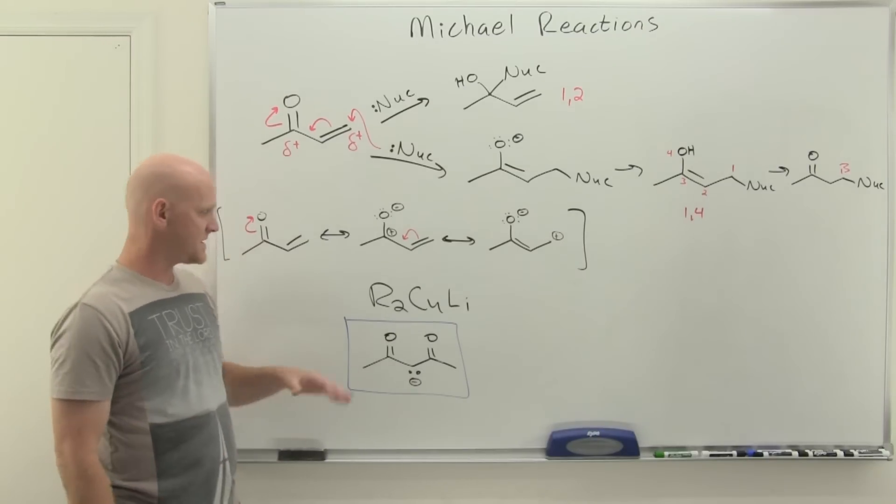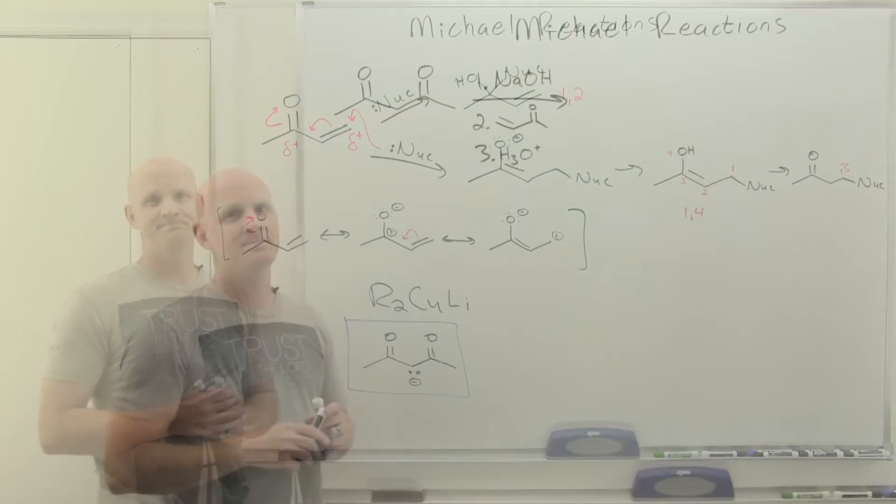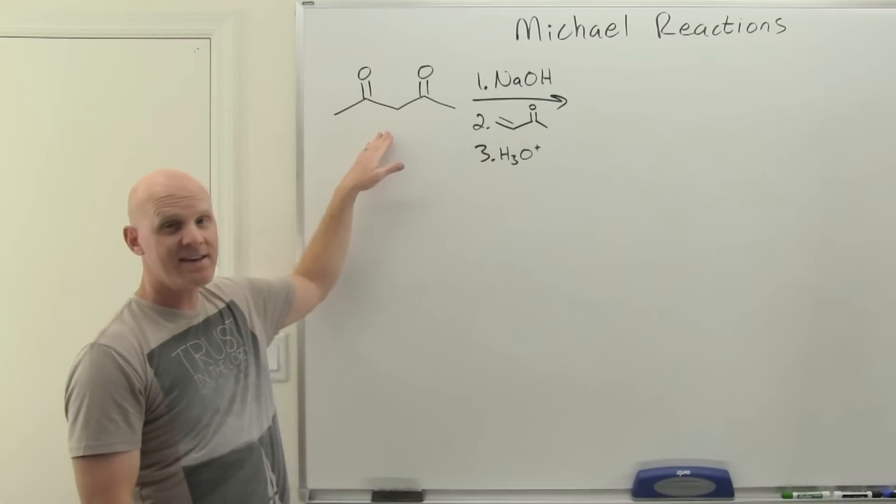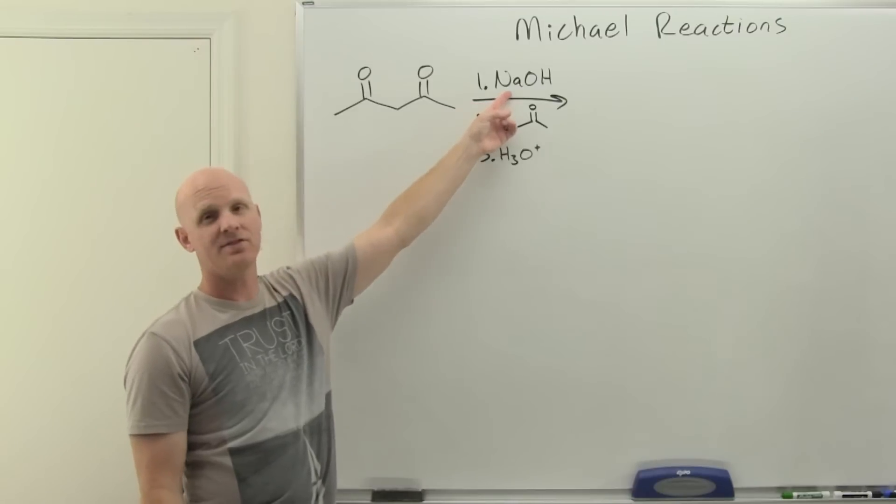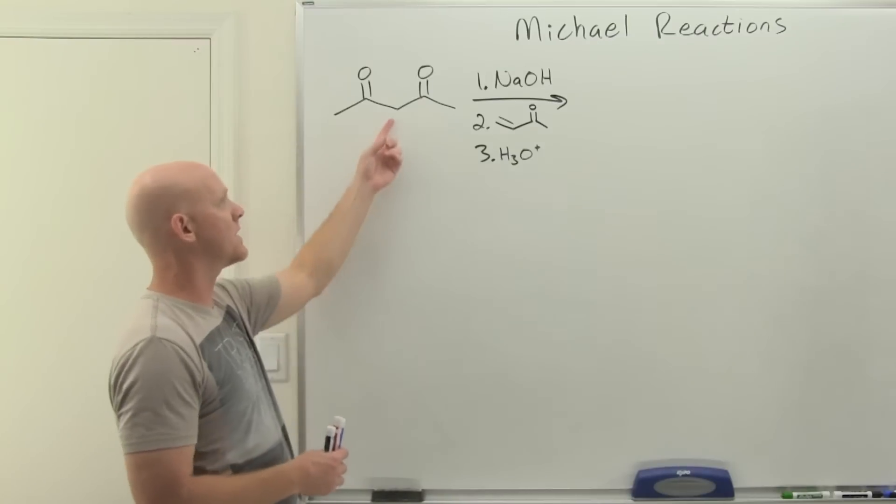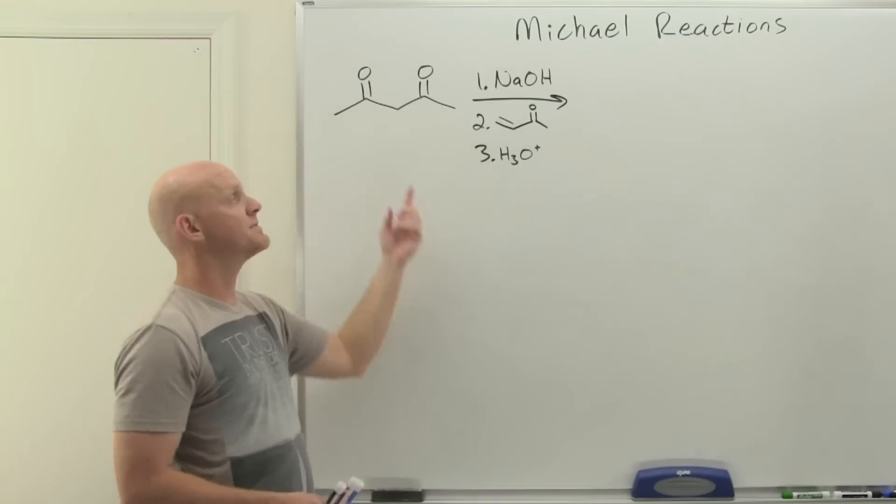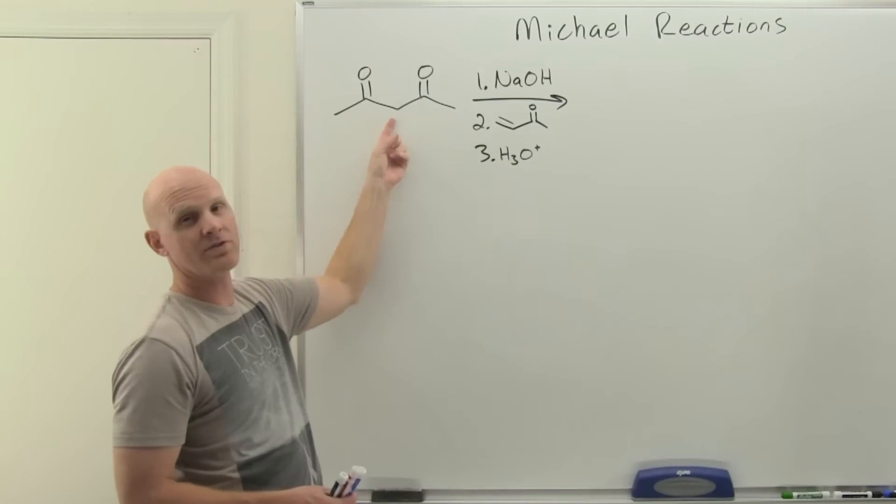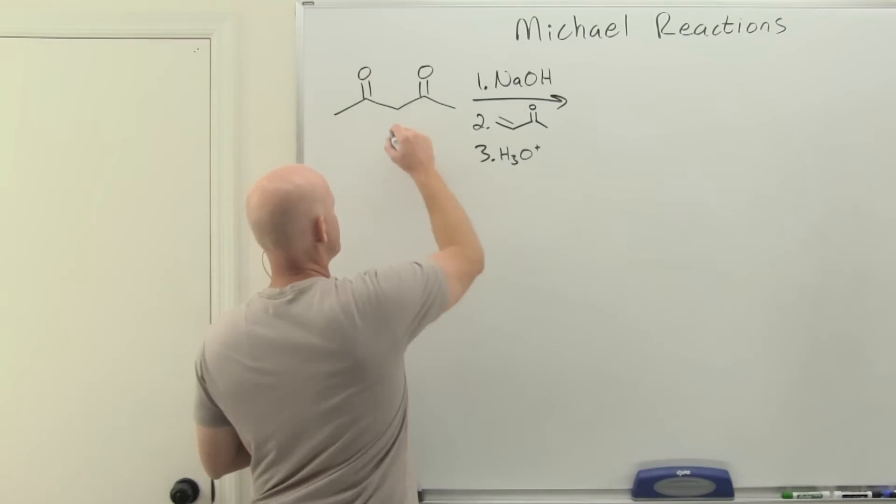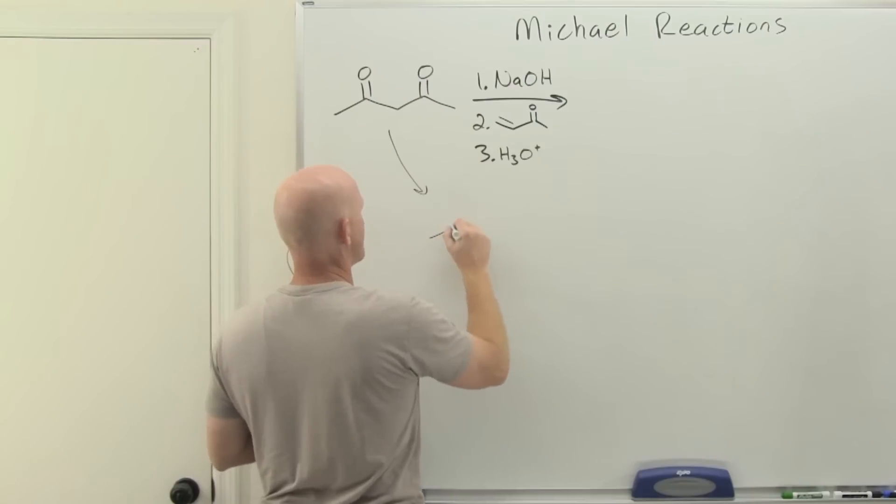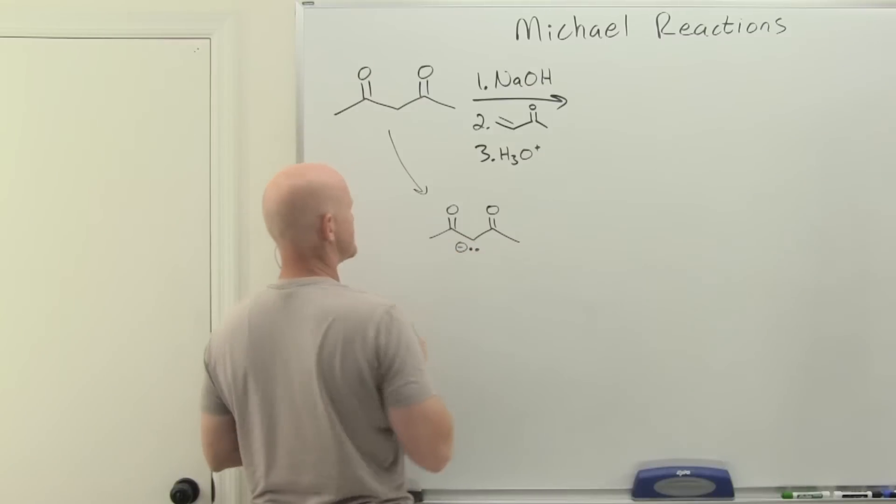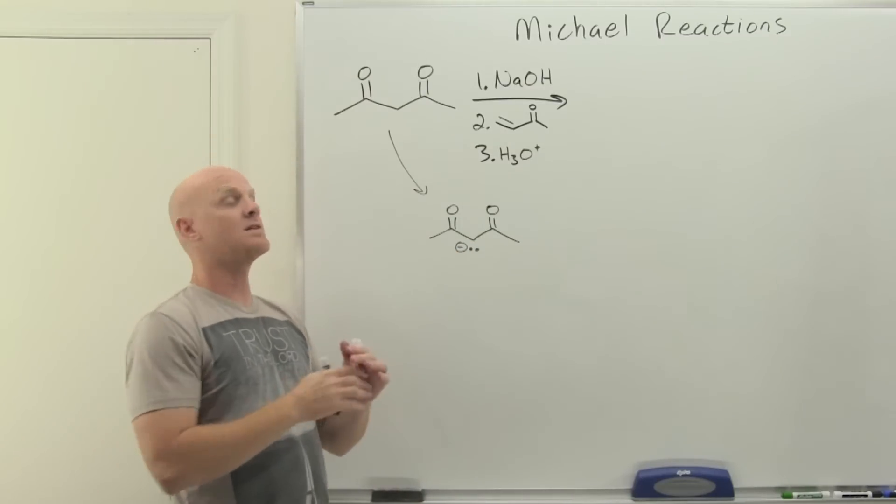Let's take a look at a couple examples. Here's our first example of a Michael reaction. We've got a beta diketone right here, and we're just going to simply add sodium hydroxide. Recall that sodium hydroxide for a normal ketone is not going to deprotonate the alpha carbon to a significant extent, but for a beta diketone, pKa is down to about nine, and it'll deprotonate it virtually 100 percent.